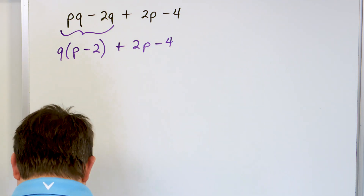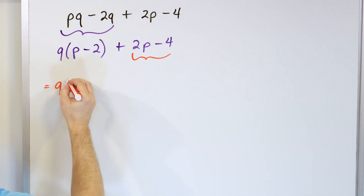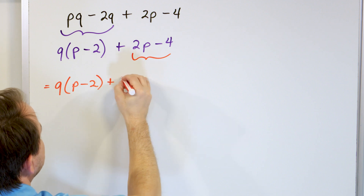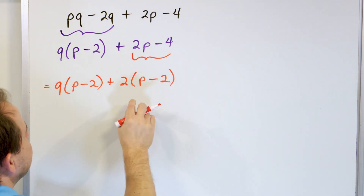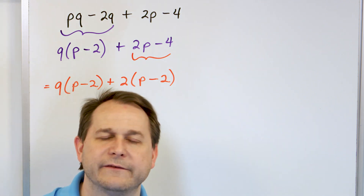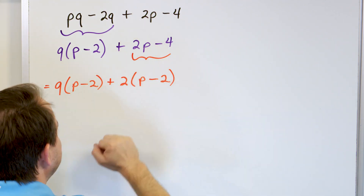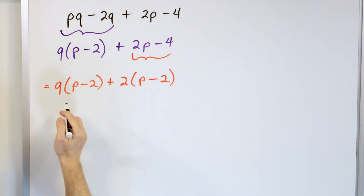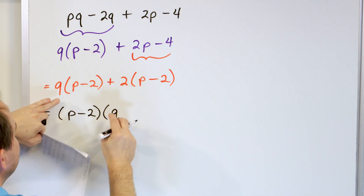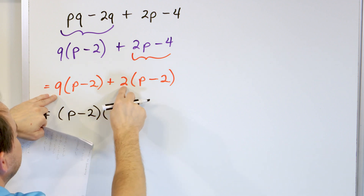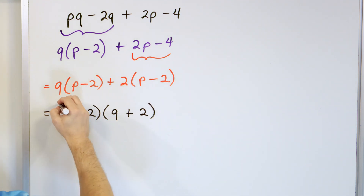Now look at the last two terms: 2 times p minus 4. I can factor out a 2 from those. So I rewrite the problem: q times the quantity p minus 2, plus 2 times the quantity p minus 2. I need p on the inside and minus 2 on the inside — 2 times p gives me 2p, and 2 times negative 2 gives me negative 4. Now you're about to circle your answer, but then you realize — there's a quantity p minus 2 here and the exact same quantity p minus 2 there. So I can pull out this entire large term.